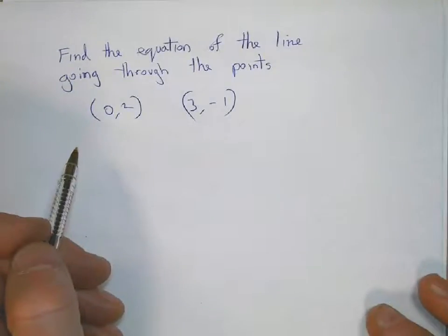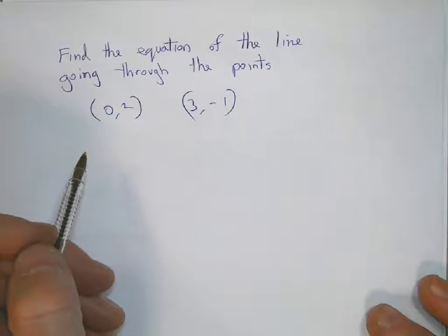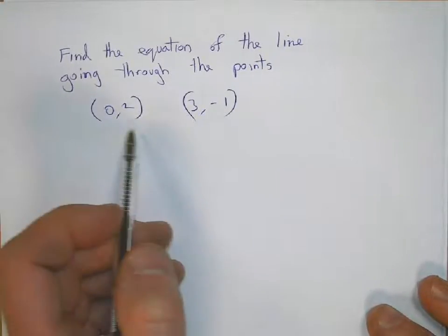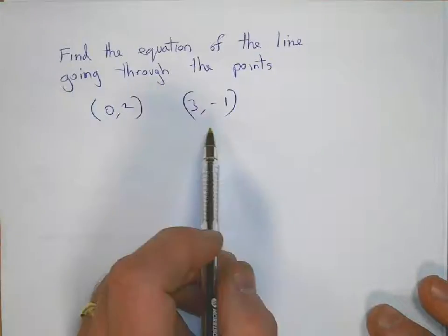In today's tutorial, we are going to find out the equation of the straight line going through the points (0,2) and (3,-1).